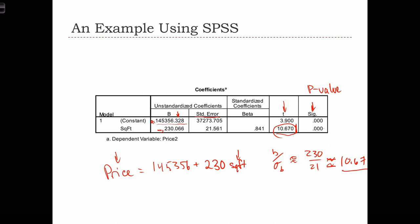So if alpha is equal to, say, 5%, p is definitely less than alpha, and therefore our regression coefficient is significant.